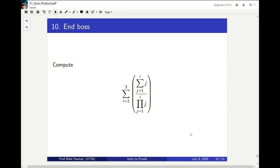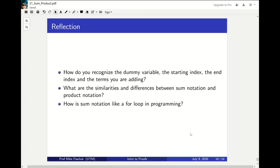Finally, let's take some time to reflect. How do you recognize the dummy variable, the starting index, the end index, and the terms you're adding? What are the similarities and differences between sum notation and product notation? How is sum notation like a for loop in programming?